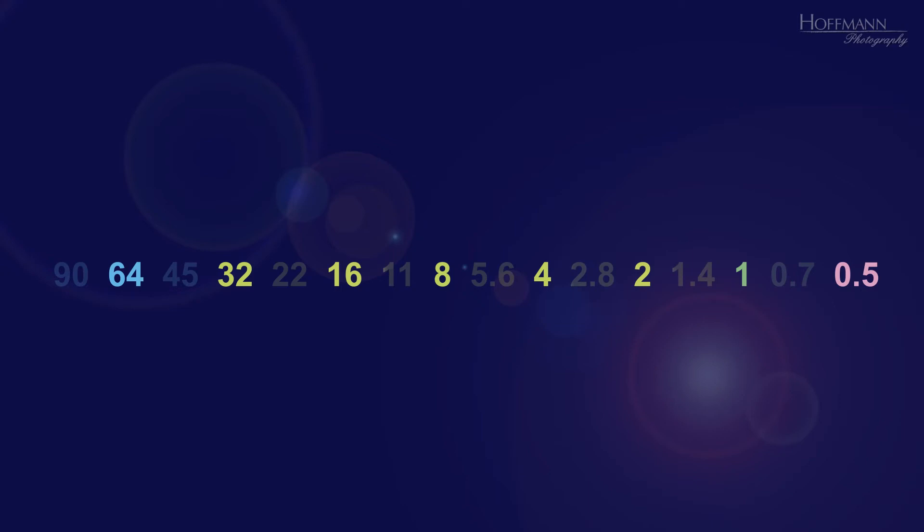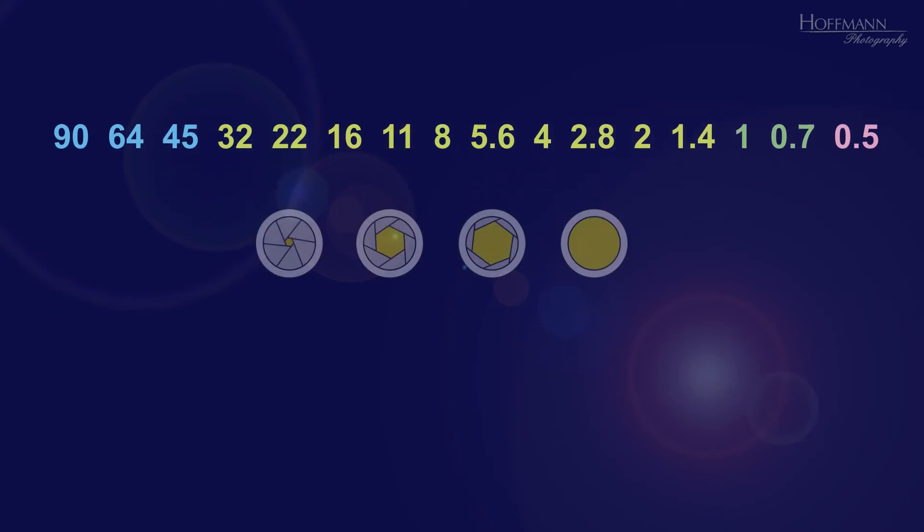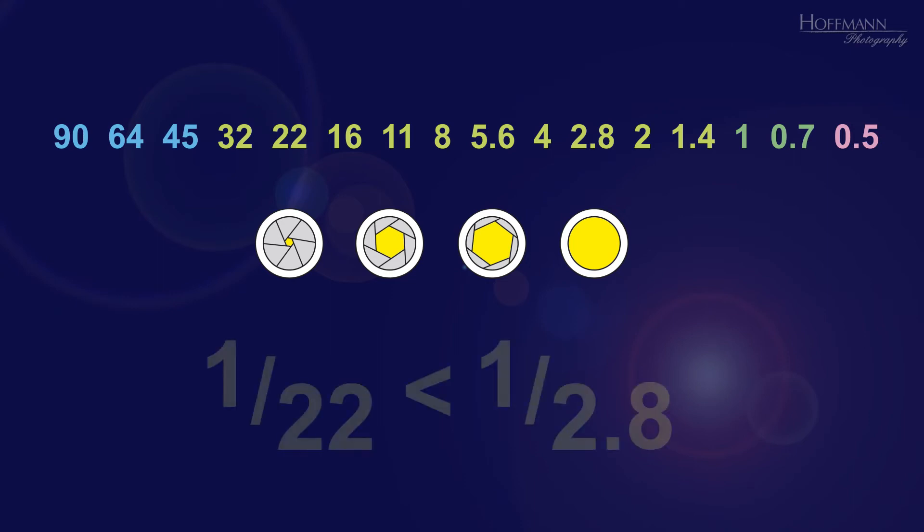But that still doesn't explain why small f-stop numbers correspond to a large aperture and large f-stop numbers correspond to small apertures. This, again, is due to a simplification. The correct f-stops would be the reciprocal, for example, 1 over 22 or 1 over 2.8. And then it becomes immediately clear that 1 over 22 is a smaller aperture than 1 over 2.8, for example.